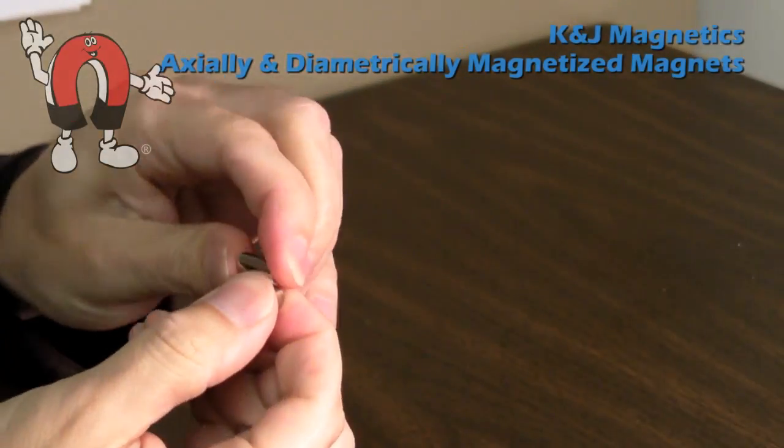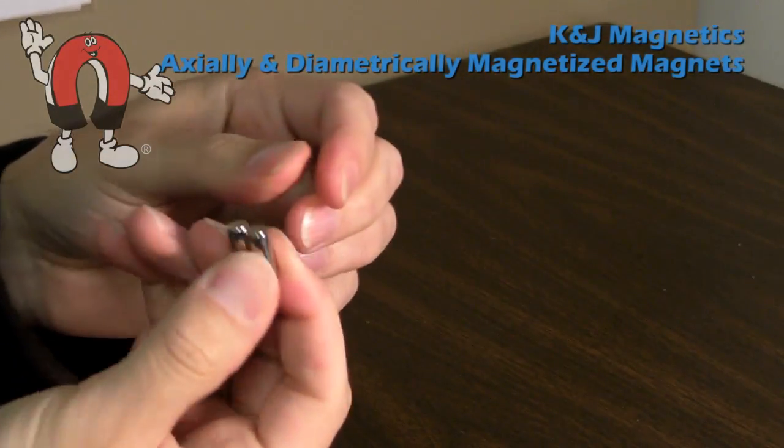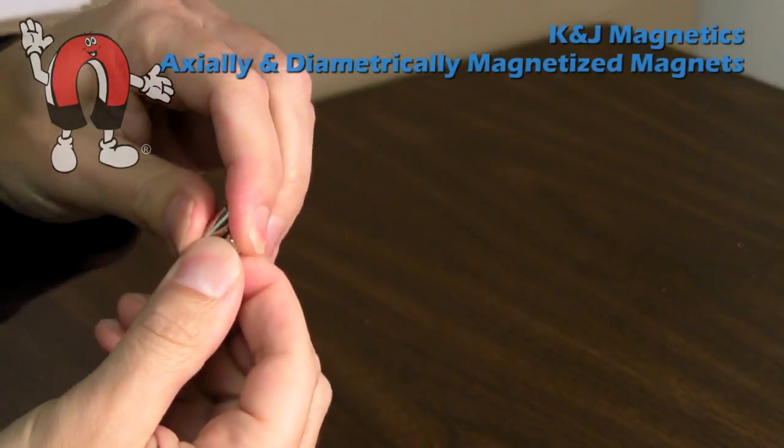The diametrically magnetized magnets have their poles on the sides, on the curved faces, so that's where they tend to stick together.